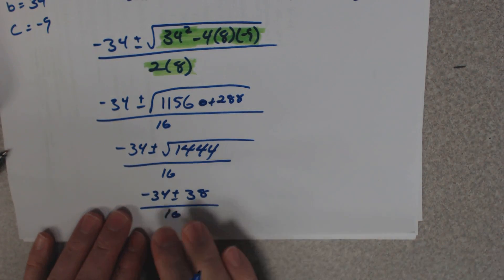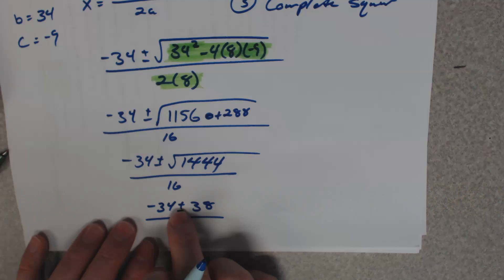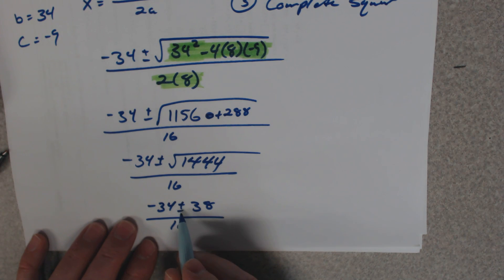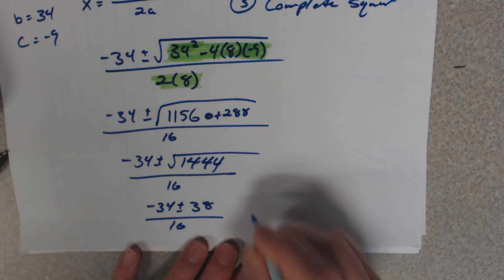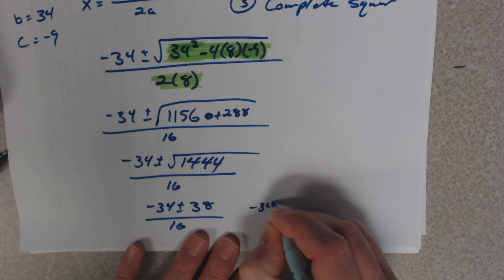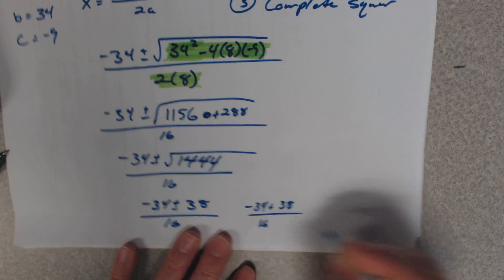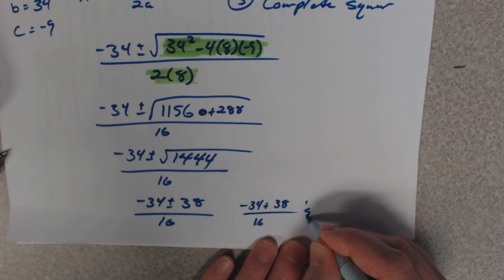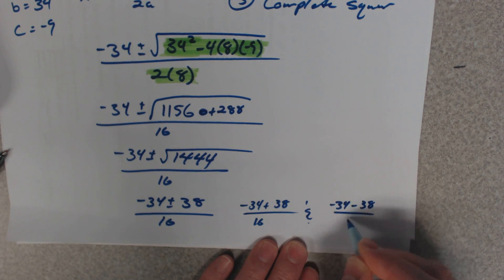Okay, so you've got two answers in here. You work it once with the plus, and then you work it once with the minus. So here's what you get. You get two answers, negative 34 plus 38 over 16, and negative 34 minus 38 over 16.